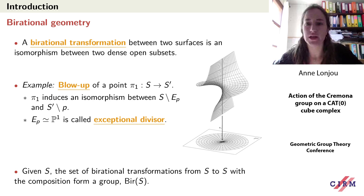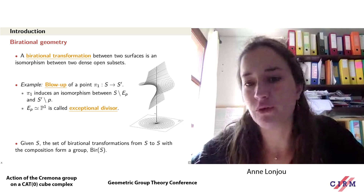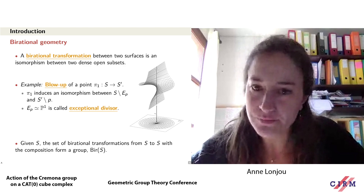A birational transformation between two surfaces is an isomorphism between two open dense subsets, for the Zariski topology — so we are allowed to remove the zero locus of polynomials. In the case of surfaces, we are allowed to remove points and curves, and contract curves.